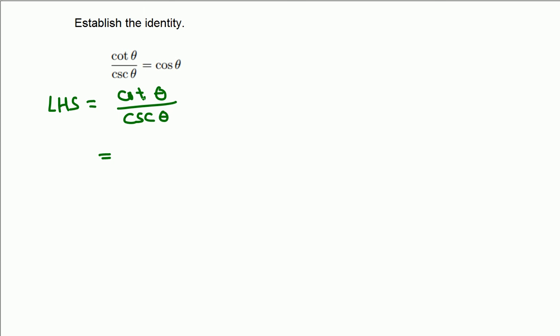Now we want to cancel something from top and bottom so that cosine theta will be the output, which is the right hand side.